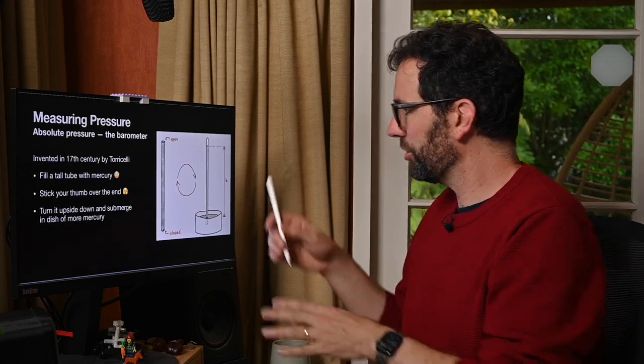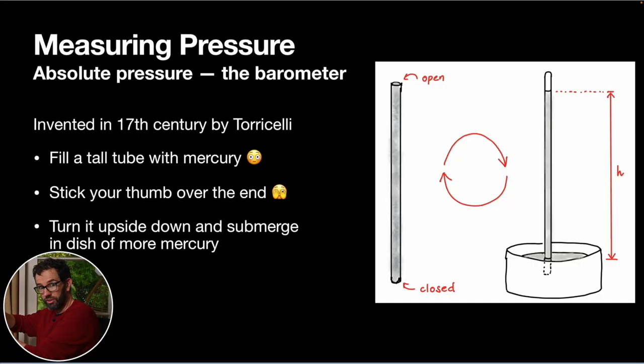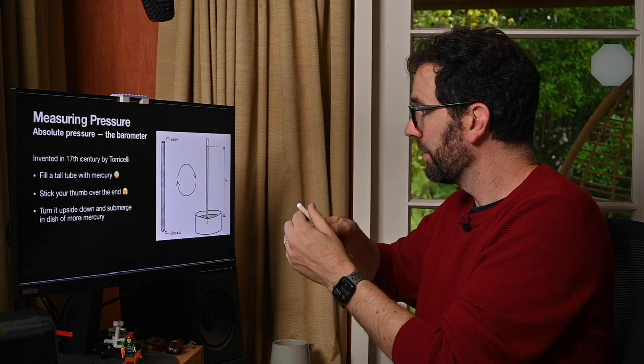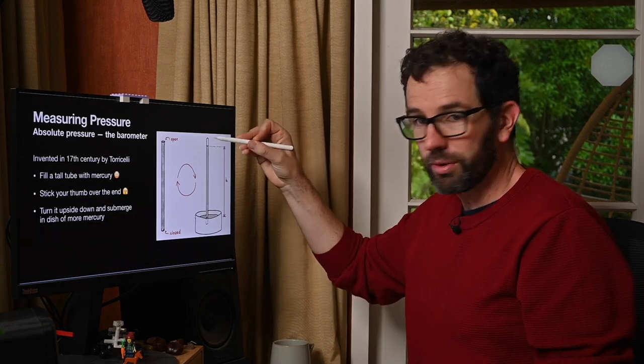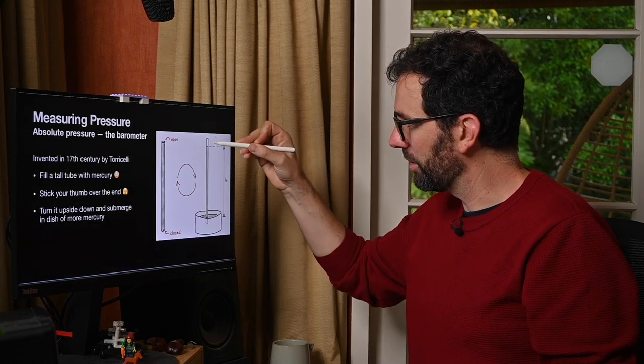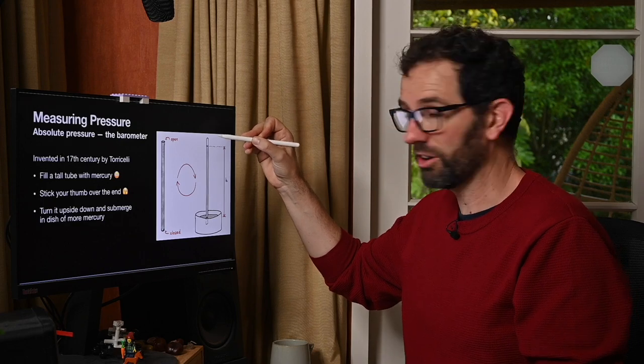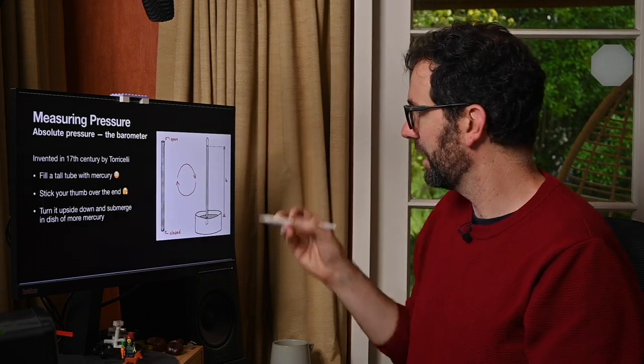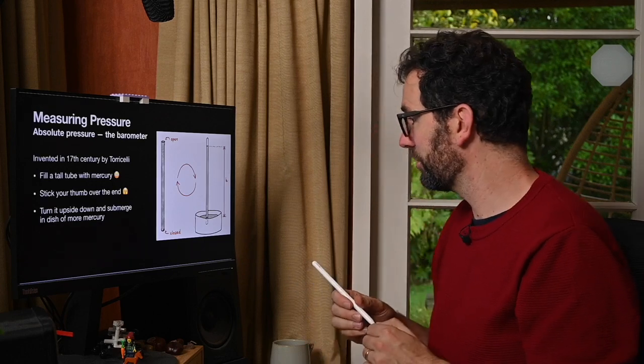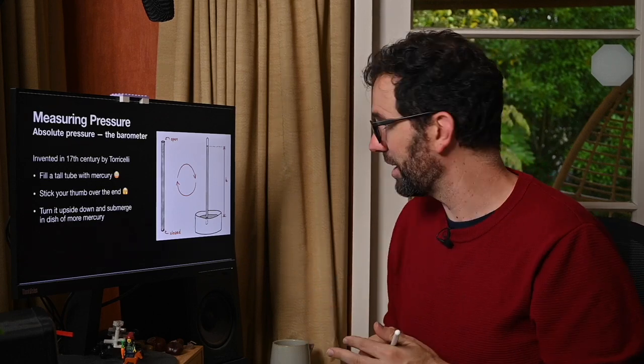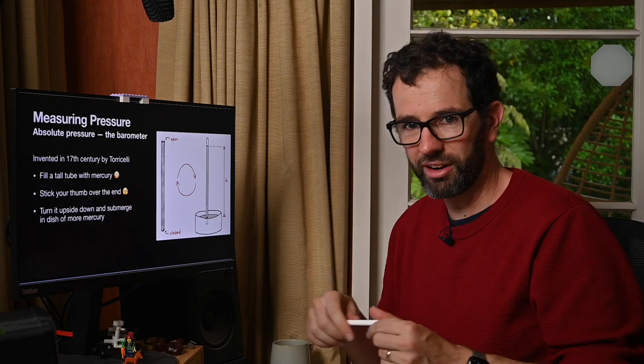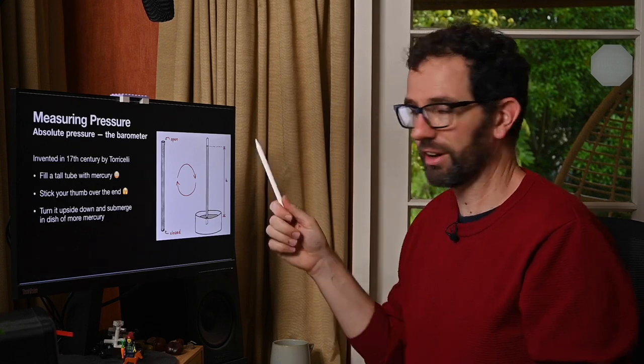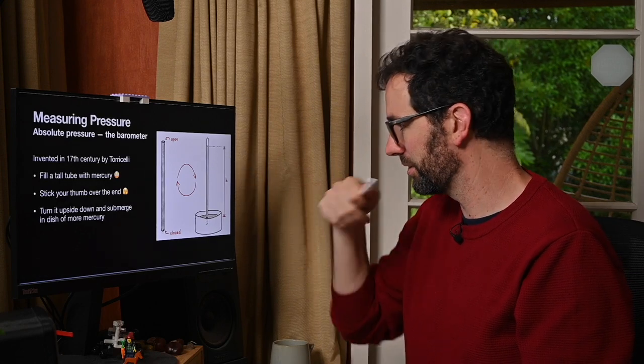So mercury has a weight to it so it's pulling down, that means that's why this little vacuum develops at the top of the tube. Essentially we're at zero pressure in that little glass bubble at the top there. It's not 100% correct because some of the mercury will turn into vapor and will increase the pressure slightly, but essentially we've got a vacuum or zero pressure inside the tube at this point.